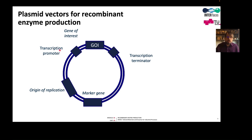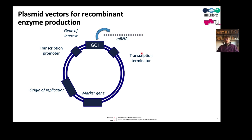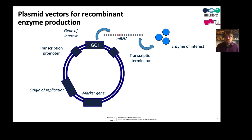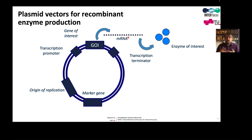The transcription promoter is needed to initiate the activity of the RNA polymerase, and a terminator is also always needed because without active termination, transcription is very inefficient. Transcription leads to the mRNA, and then the mRNA leads to our enzyme of interest. The concentration of our enzyme correlates with the mRNA concentration. There are two ways to achieve high mRNA concentration: use a strong promoter for very active transcription, or use a multi-copy plasmid. For example, a plasmid with 50 copies versus 5 copies would give 10 times more mRNA with the same promoter.